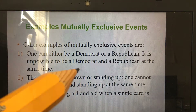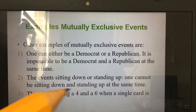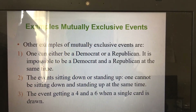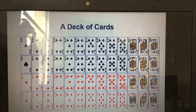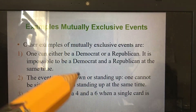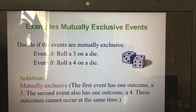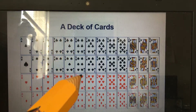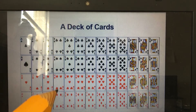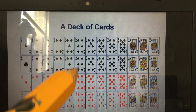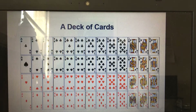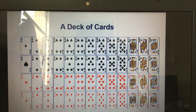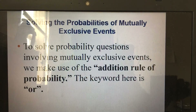How about getting a 4 and a 6 on a single card? Let's look at the chart. We have all the sixes here, and all the fours here — you cannot get a 6 and a 4 on the same card. Because of that, we say that the two events are mutually exclusive.